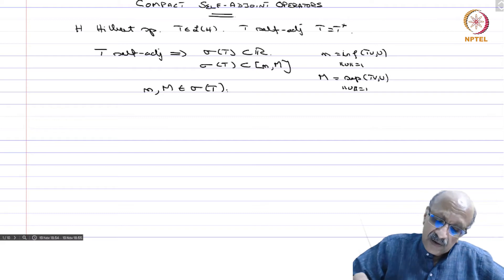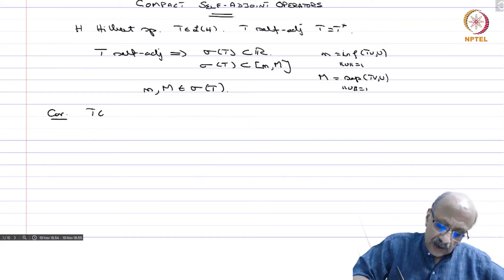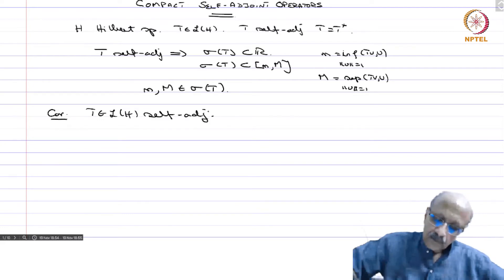Corollary: T in L(H) self adjoint and sigma T equal to singleton 0 implies T equal to 0.